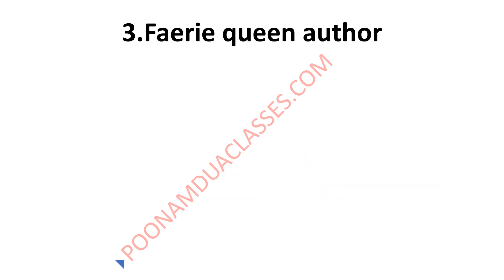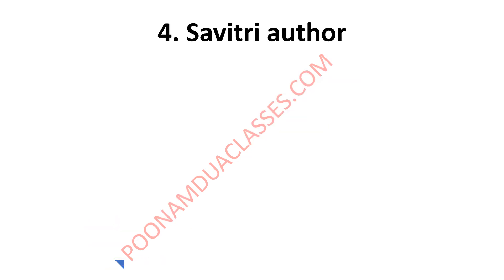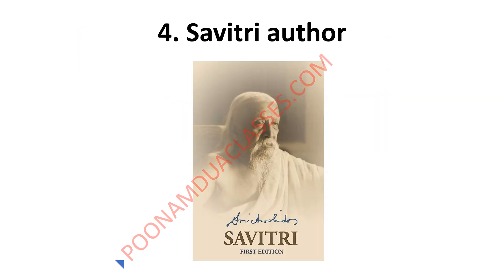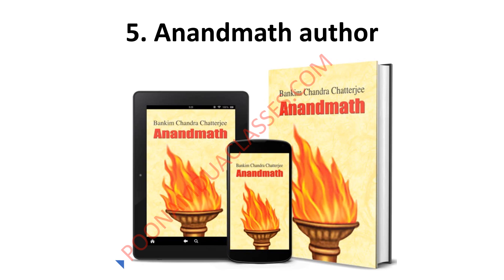There was a question about the authorship of The Faerie Queene — we know it is written by Edmund Spenser in 1590. Then there was a question about the author of Savitri, the epic, which was by Sri Aurobindo. There was also a question about the author of Ananda Math, and it was Bankim Chandra Chatterjee, who also gets credit for Vande Mataram.